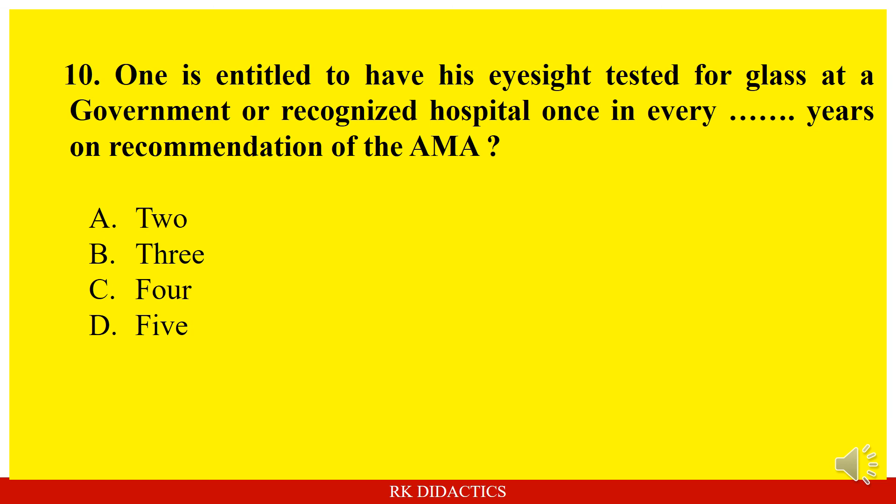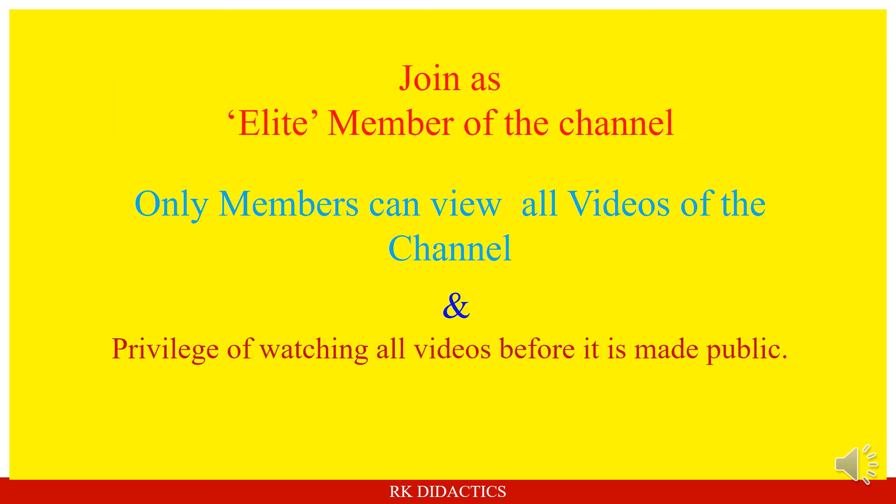Question: One is entitled to have his eyesight tested for glasses at a government or recognized hospital once in every how many years, on recommendation of the AMA? Options: two years, three years, four years or five years. Answer is three years. Thank you. You may join as an allied member of the channel, as only members can view all videos and have the privilege of watching all videos before they are made public. Thank you again.